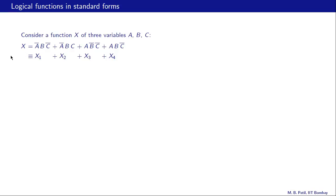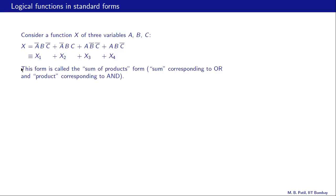Let us now discuss logical functions in standard forms. Consider a function X of three variables a, b, c expressed as X = X1 + X2 + X3 + X4. This form is called the sum of products form because it looks like a sum — using OR operations — of terms where each term looks like a product, using AND operations. Sum corresponds to OR and product corresponds to AND.